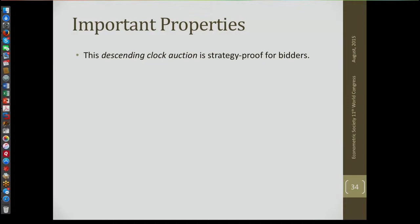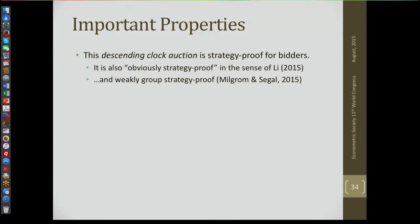Suppose calculations were complicated — I have to solve a graph coloring problem to figure out if there's any way to assign you a channel. Nevertheless, you can figure out this is strategy-proof for you: I've offered you $1,000 for a seat worth $350 to you. You won't say no to $1,000, regardless of the algorithm. So it's obviously strategy-proof, in the sense that Shen Wu will make precise. It's weakly group strategy-proof, meaning that if no transfers are allowed between participants, there's no joint deviation that any group of bidders can adopt that's strictly profitable for all of them. Unless the bidders collude and make side payments, there's no group deviation that's strictly profitable for all participants.